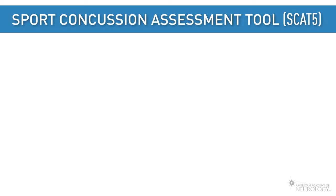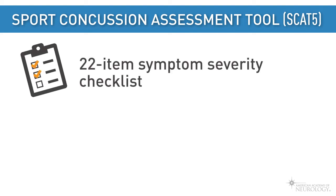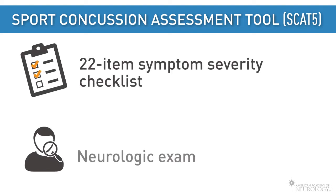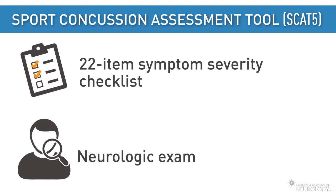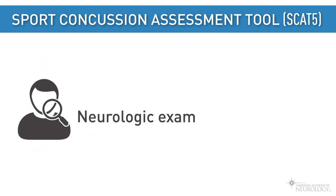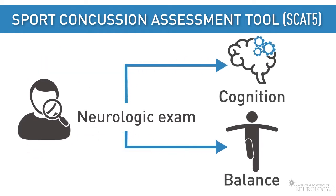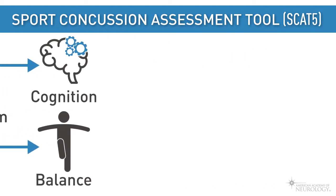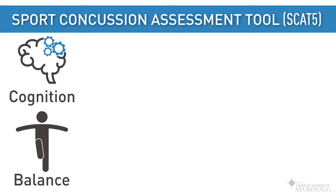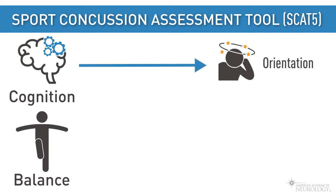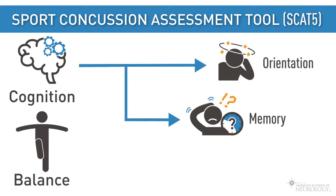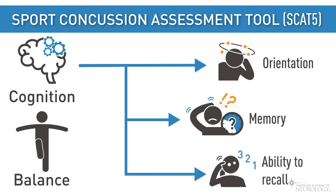The Sport Concussion Assessment Tool, 5th edition, or SCAT-5, is a widely accepted tool for sideline assessment. It includes a 22-item symptom severity checklist and a brief neurologic examination that includes assessment of cognition and balance. The cognitive component includes assessment of orientation, immediate and delayed memory, and the ability to recall digits and months in reverse order.